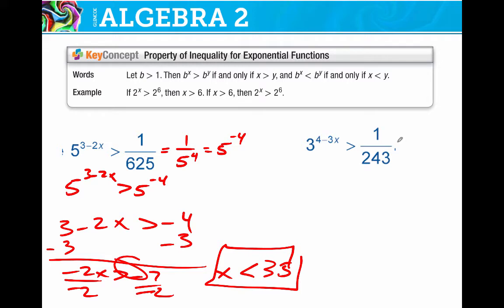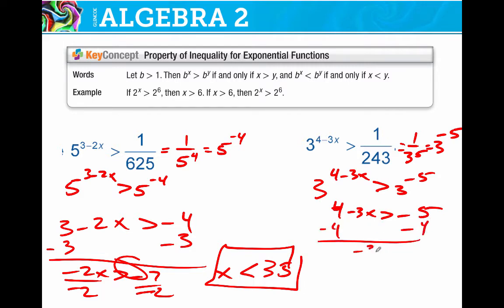243. Figure out what that is. I think it's 3 to the 5th. You might need your calculator for that. Just test it out. So if this is 1 over 3 to the 5th, that means it's 3 to the negative 5. Bring it up. 3 to the 4 minus 3x is greater than 3 to the negative 5. I'm going to set these. And now, again, I've got to watch out. I've got to watch out for dividing by a negative. And I've got to flip that sign. x is less than 3.